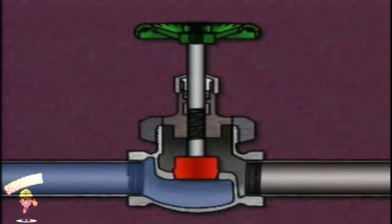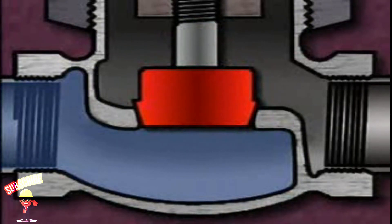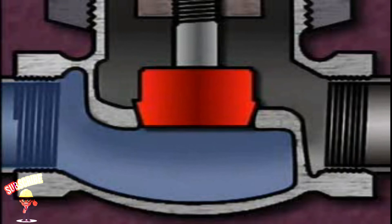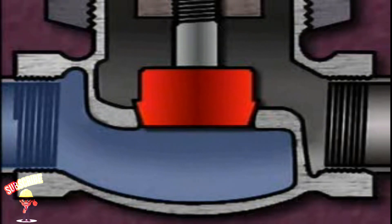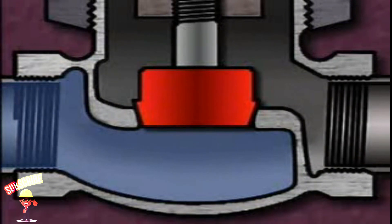Several different types of discs are commonly used in globe valves. A standard or conventional type disc seats against a tapered, flat-surfaced seat. A globe valve with this type of disc is generally used in either the fully open or the fully closed position, though it can also be used for moderate throttling or regulating of flow. Globe valves with conventional discs are normally used in low-pressure, low-temperature systems.